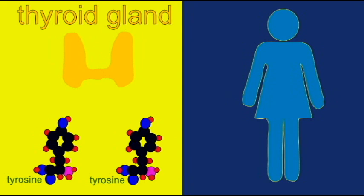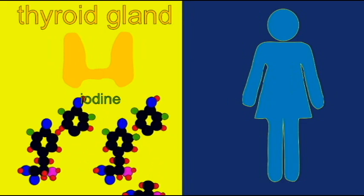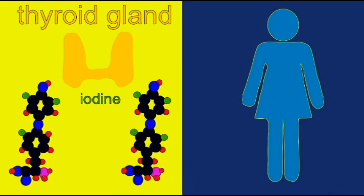This can be three ions of iodine to form T3, or triiodothyronine, or four ions of iodine to form thyroxine, or T4.